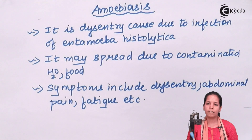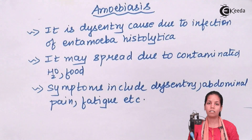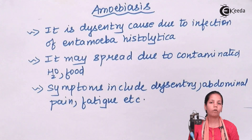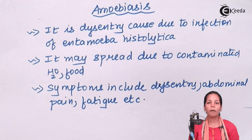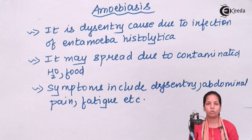If we consume food that has been infected by certain organisms — bacteria, fungus, or any one of them — especially in rainy seasons or places which are quite dirty and have a lot of bacteria, you can get certain disorders. Amoebiasis is one of them, in which you get dysentery for a prolonged time due to a bacterium called Entamoeba histolytica.